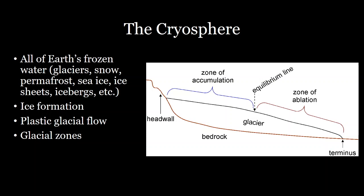Each glacier is divided into two different glacial zones. The upper area is called the zone of accumulation, where more snow accumulates than melts throughout the year. Further down where it's warmer, you have the zone of ablation, where more melting occurs than snowfall. Snow from the accumulation zone flows into the ablation zone to make up for that mass loss.